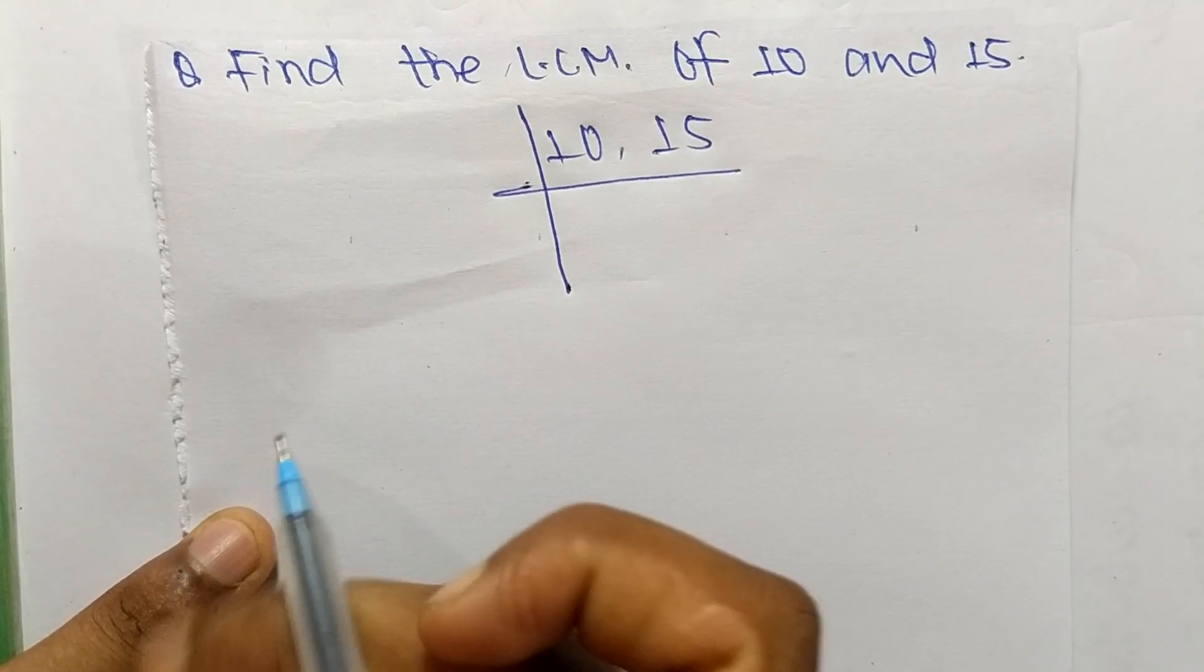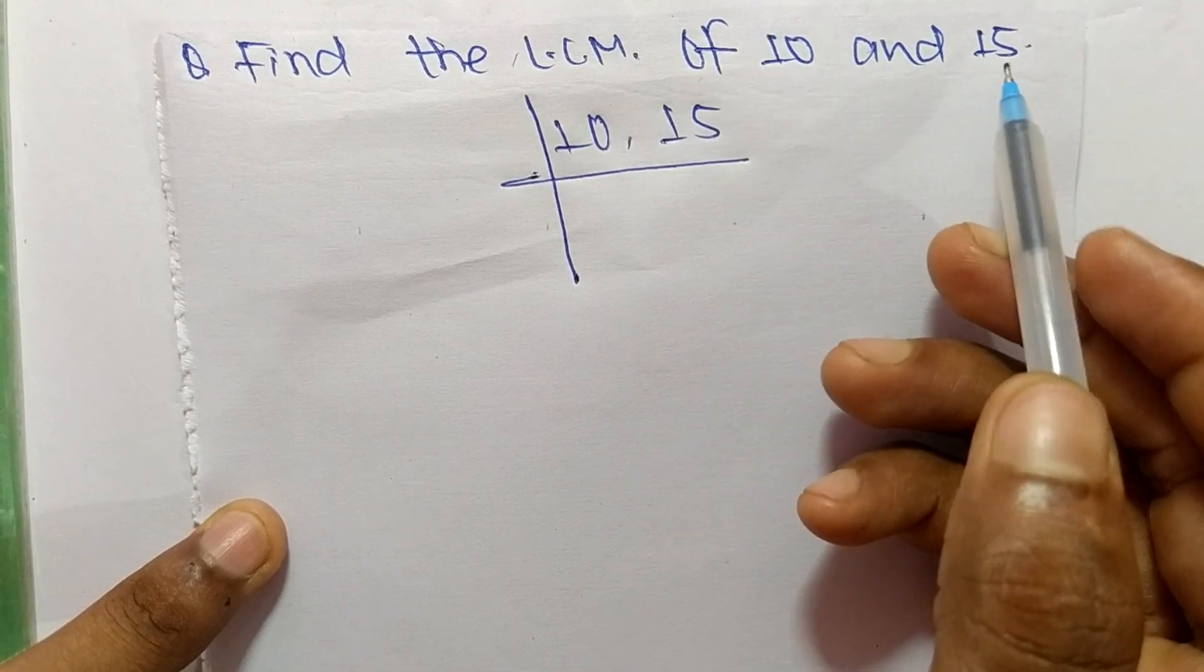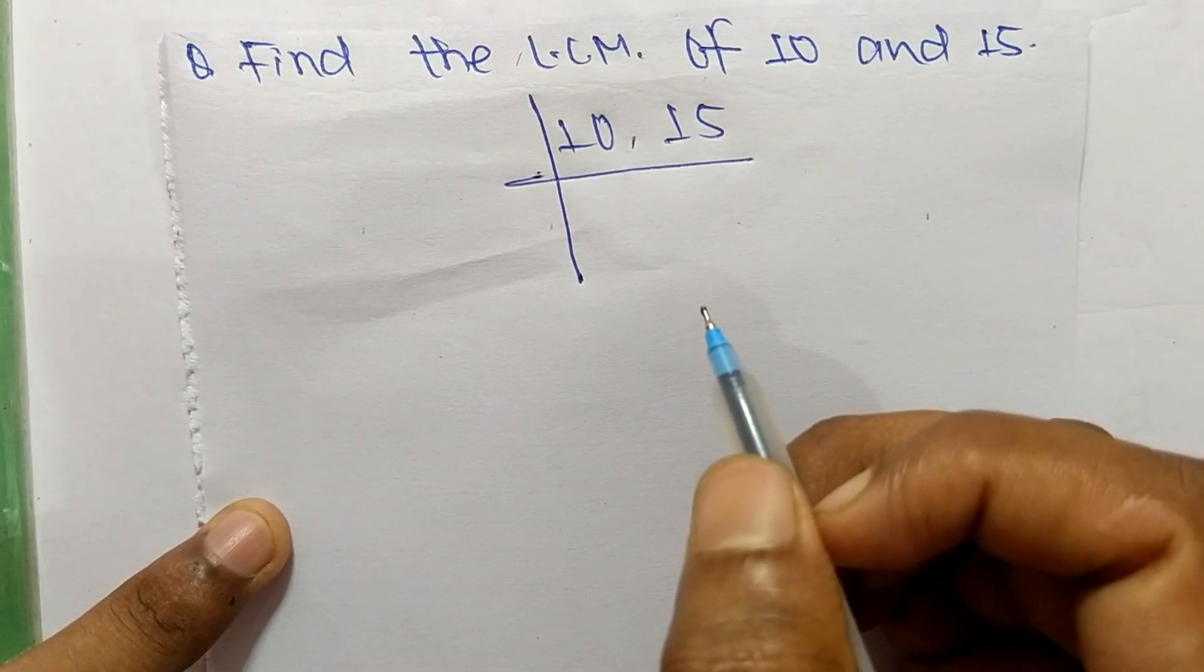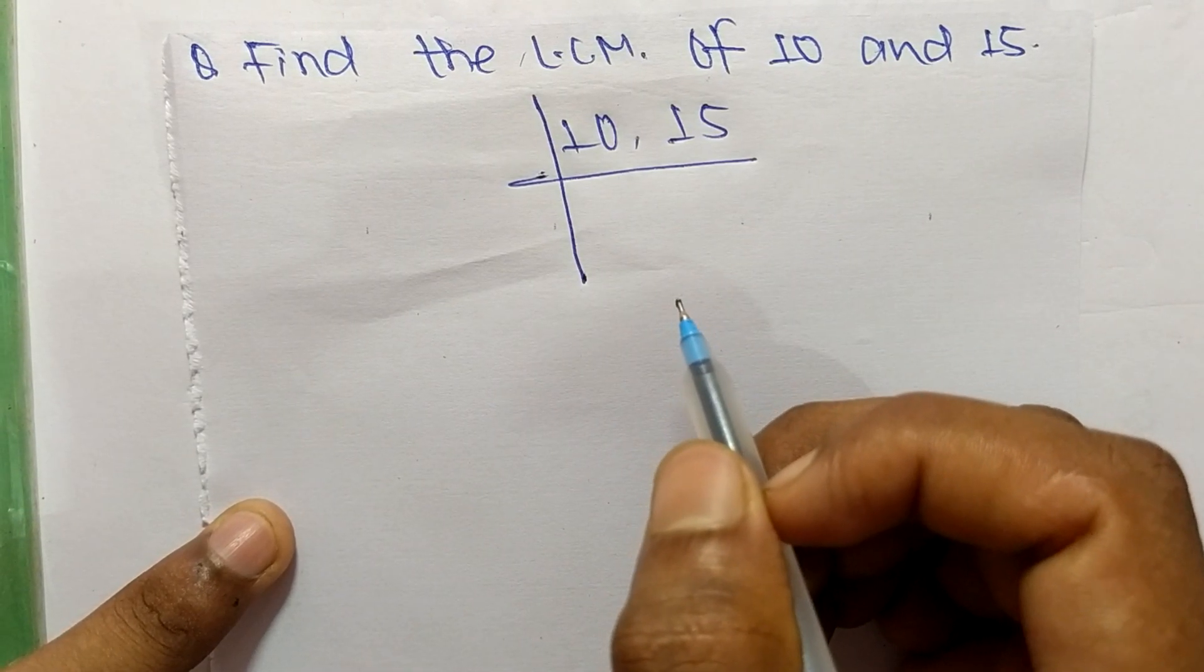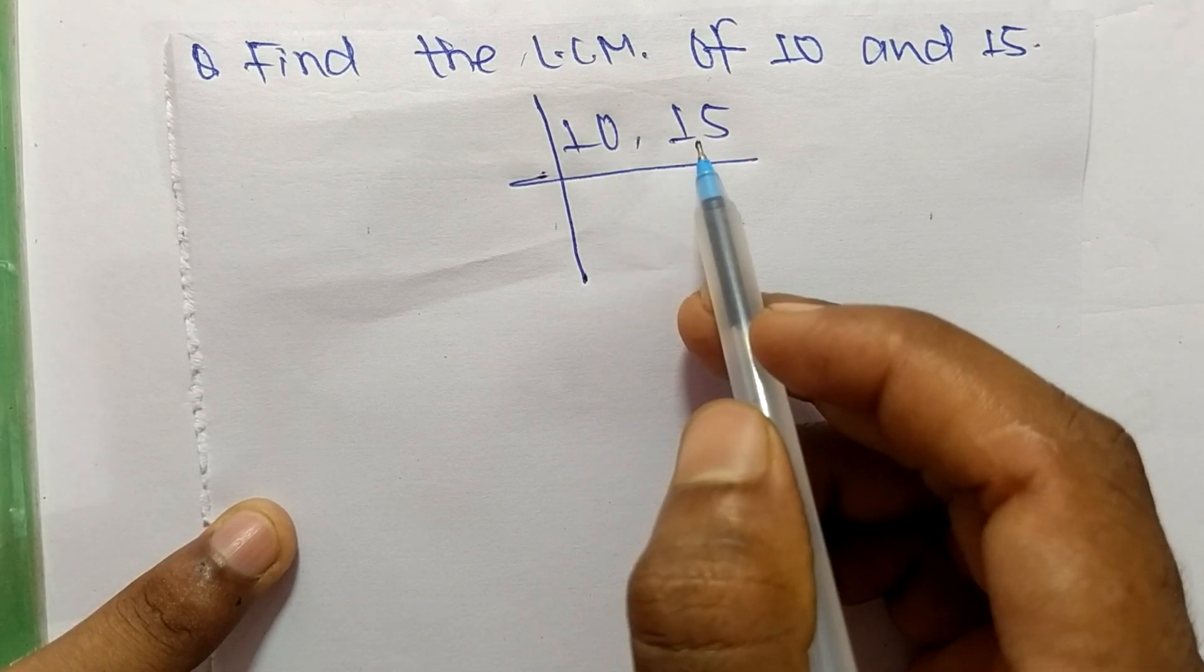So today in this video we shall learn to find the LCM of 10 and 15. To find LCM, first of all we have to choose the lowest number which can exactly divide both numbers.